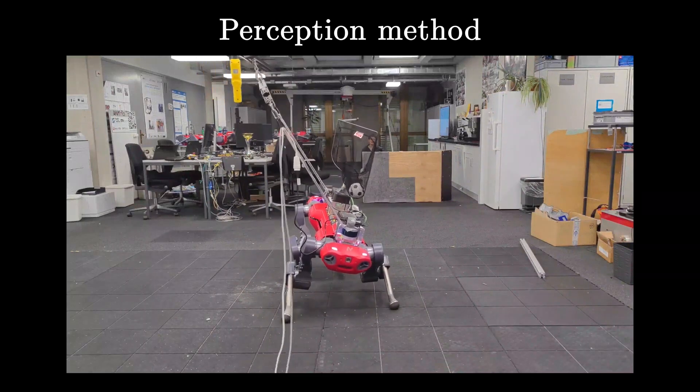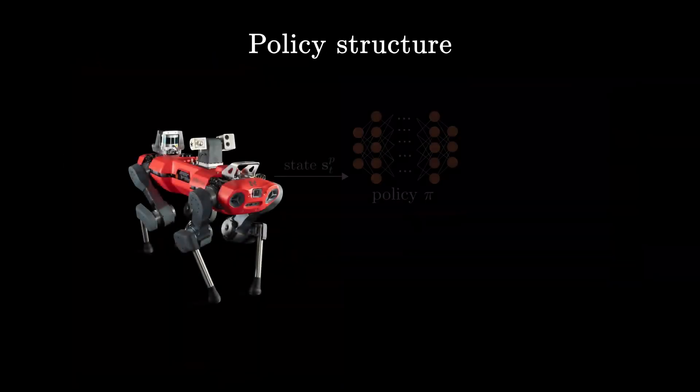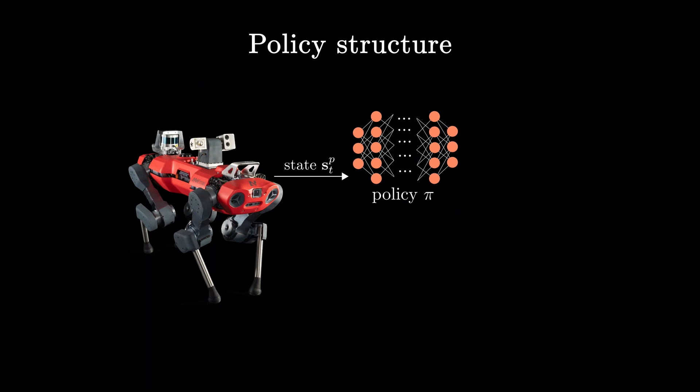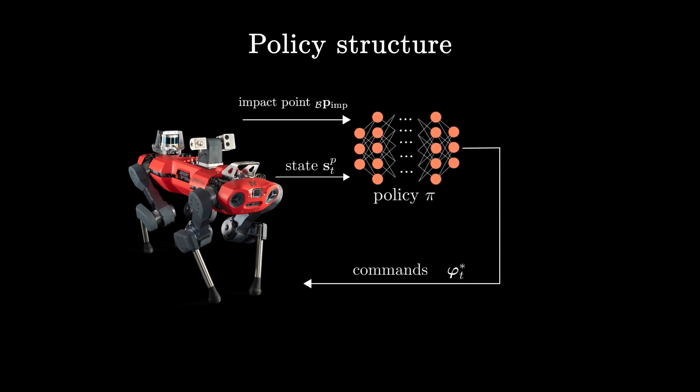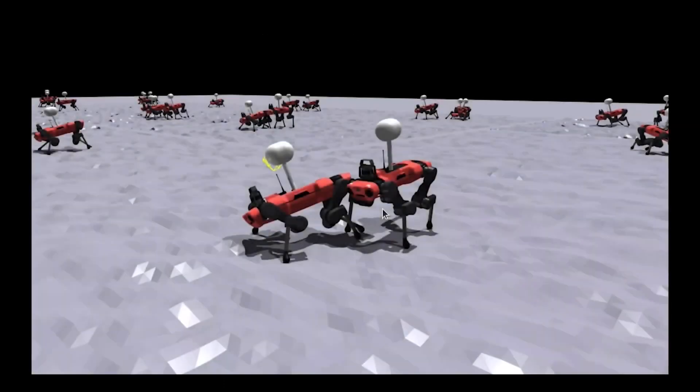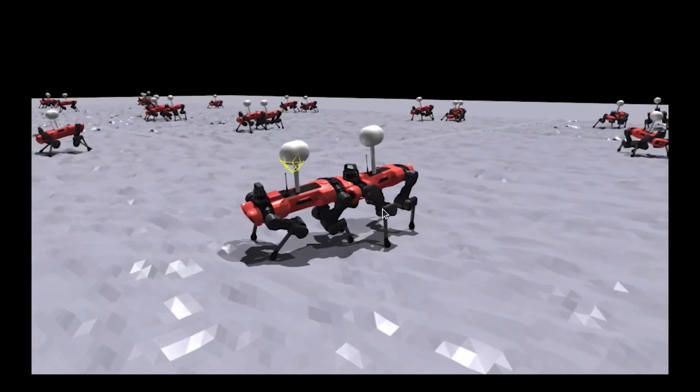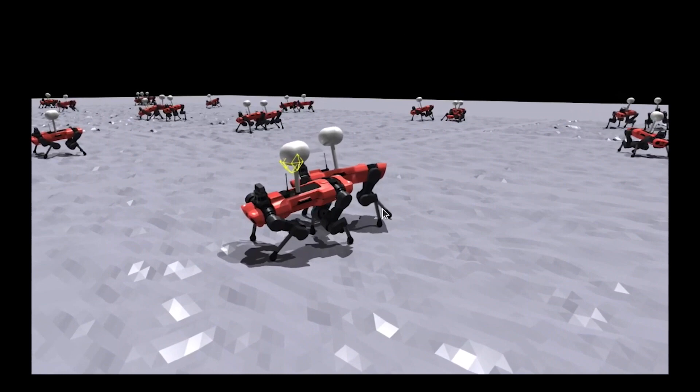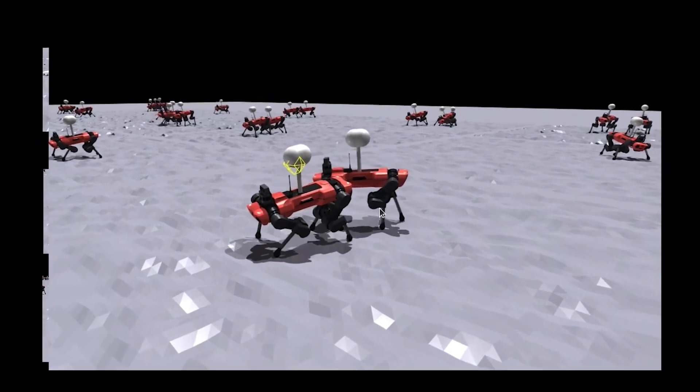The locomotion policy executing the catch is an MLP that takes in the 45-dimensional state vector and the impact point in the robot's coordinate system and outputs the joint-level commands needed for a successful catch. We formulate rewards for tracking the impact point, stability and regularization, then train the policy in a domain-randomized simulation with PPO.